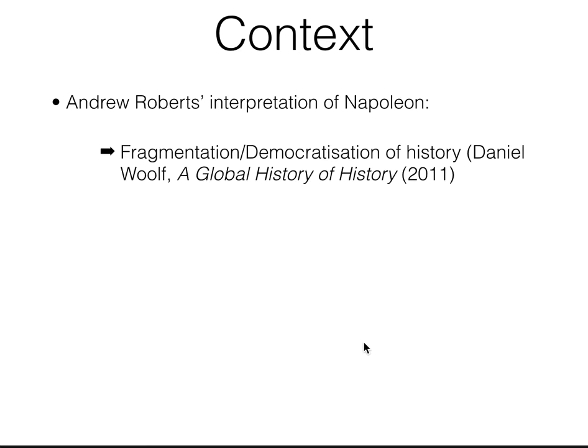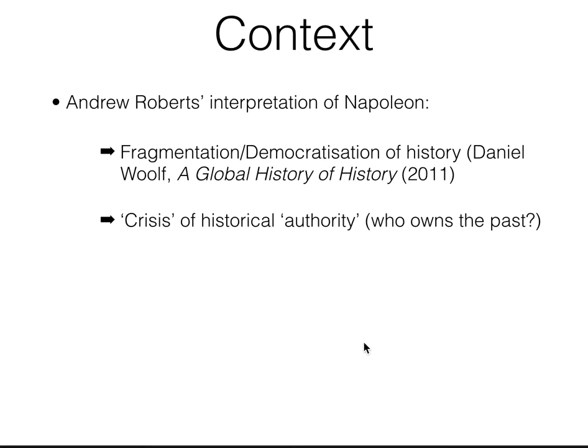Andrew Roberts is an example of this fragmentation because he's not an academic historian, but he is a very influential figure in the debate about Napoleon. This suggests that history has been opened up in all sorts of different ways. There's also the crisis of historical authority — historians are no longer seen as the guardians of the past. Connected to this fragmentation and democratization, historical authority no longer belongs to one group. The professional historian had quite a lot of influence through the 17th and 18th centuries, but in the 20th century this began to unravel, and in the 21st it's clear their position is as a fellow traveller in understanding the past.